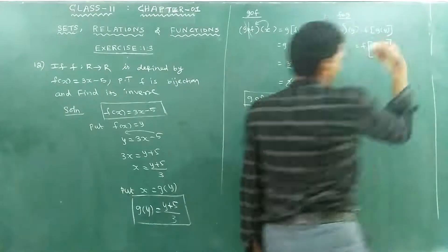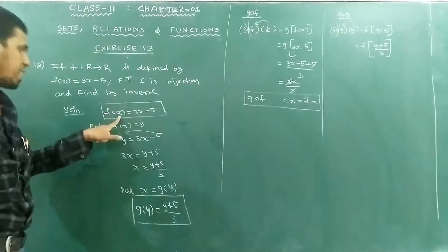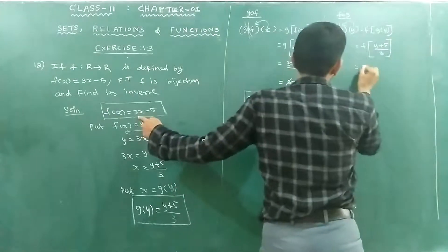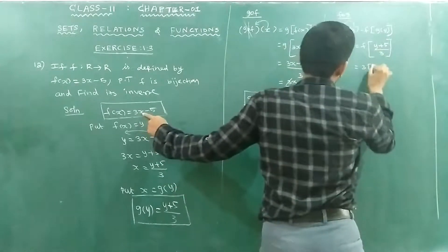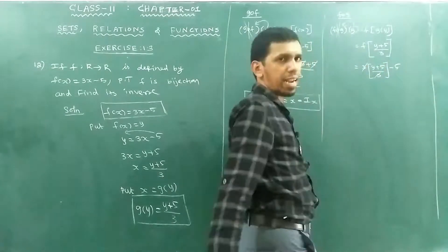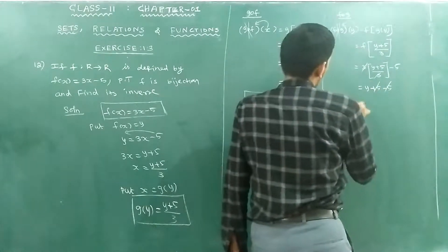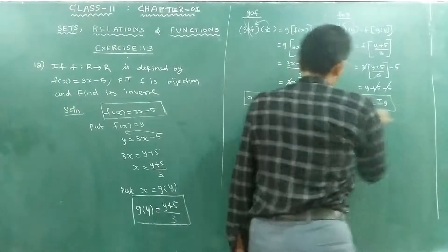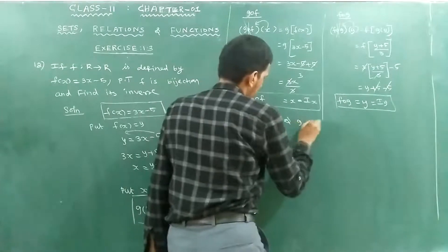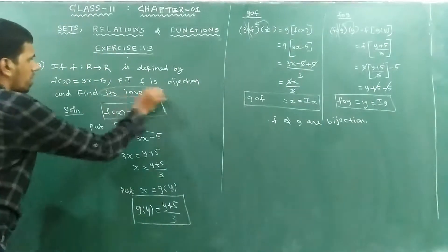Now compute f of g of y. g of y is y plus 5 divided by 3, so f of g of y equals 3 times (y plus 5 divided by 3) minus 5. That gives y plus 5 minus 5, which simplifies to y. So f of g of y equals y.